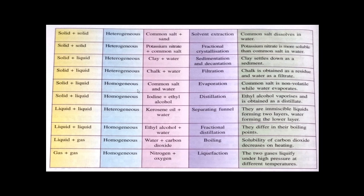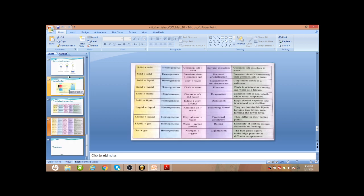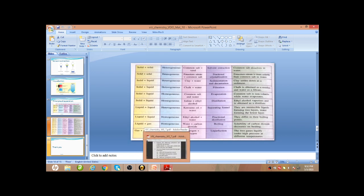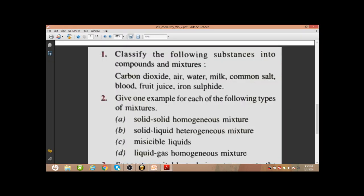So this is all for today's class content. Now we will be doing the worksheet which was given in our last class, and today's worksheet you should also do properly. We will be discussing that in our next class. Now here you pause the video and go through the worksheet and study material. This worksheet was given last class: classify the following substances into compound and mixture. We have to make two columns — one for compound and another for mixture.